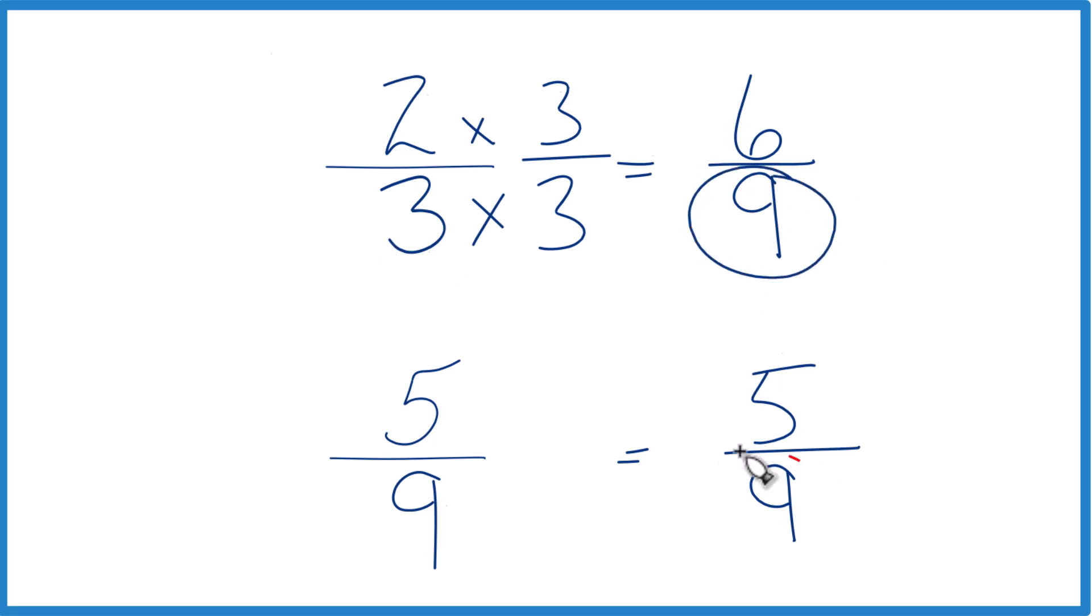Now we have the same denominator, though. We're just going to compare the numerators here. And you can see six is greater than five, so six-ninths, that's going to be greater than five-ninths, only by one-ninth, six minus five is one, but still greater.